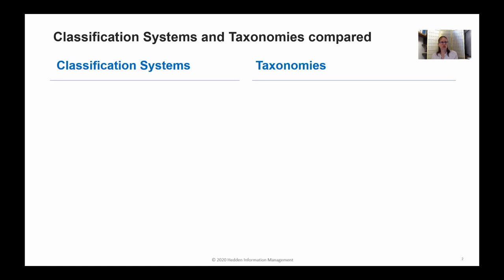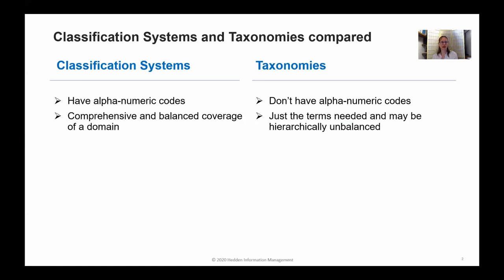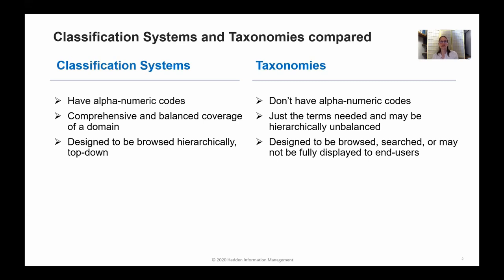So let's take a closer look at the comparison of classification systems and taxonomies. The obvious difference is that classification systems have alphanumeric codes and taxonomies do not. Taxonomies often have unique identifiers on terms, but that's something different — it's not displayed to the end user the way codes are; it's just a way of managing terms so they are unique. Classification systems are intended to be comprehensive and give balanced coverage of a domain, dividing everything into categories. Whereas taxonomies take a different approach — it's a collection of just the terms that are needed, and so when arranged in a hierarchy, that hierarchy could be unbalanced. Classification systems are designed to be browsed hierarchically, top-down — that's the only way.